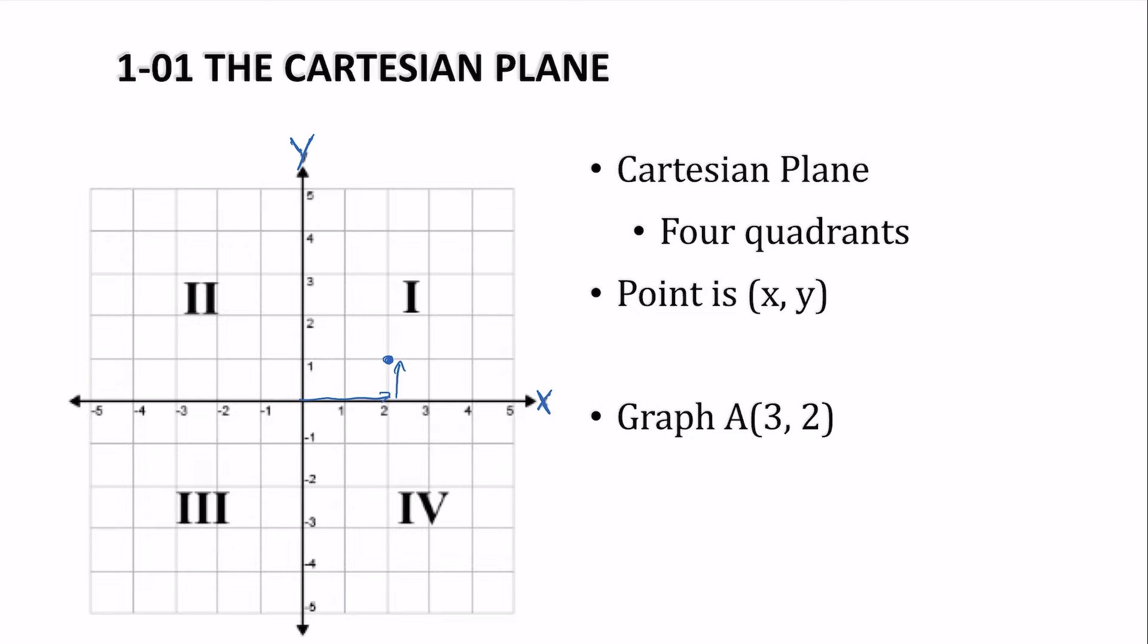So let's graph 3, 2. So that's 3 in the x and 2 in the y. Or negative 1 in the x and up 4 in the y.